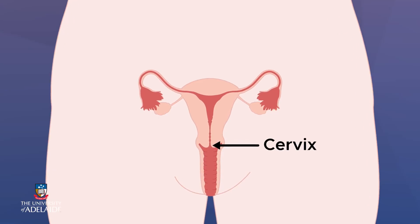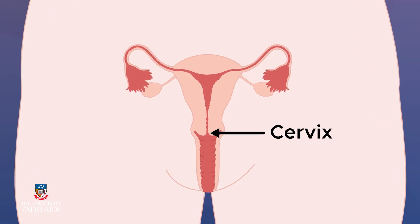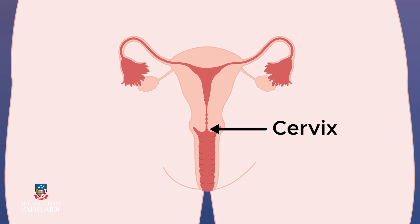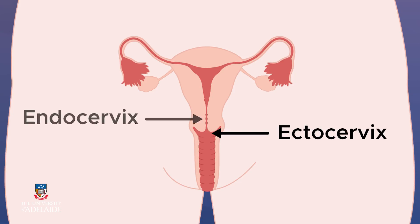But before we go too far, let's take a closer look at the cervix. The cervix is a cylinder-shaped neck of tissue that connects the vagina and the uterus. There are two portions that make up the cervix: the ectocervix and the endocervix. The overlapping area between these regions is called the transformation zone, which is the zone where cancerous tumours most commonly arise.